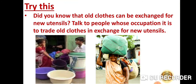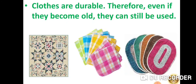Did you know that old clothes can be exchanged for new utensils? Talk to people whose occupation it is to trade old clothes in exchange for new utensils. People come along with vessels, and if you give them a proper amount of clothes, they weigh those clothes and give you utensils in exchange for them. Clothes are durable — that means they are long lasting — so even if they become old, they can still be used. Usually, we keep those clothes at home and use them as a scrubber, or give them in exchange for utensils, or dispose them off.